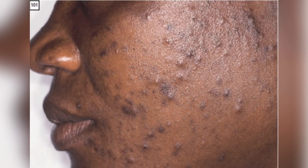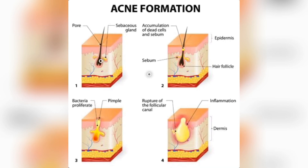Welcome to another Med in a Minute. In today's video, I'll be looking at acne vulgaris. Acne is formed when sebum produced from the sebaceous gland accumulates along with dead cells and keratin — proteins in the skin — to block the pores. When the pores are blocked, bacteria, especially P. acnes bacteria, cause inflammation, leading to pimple formation.